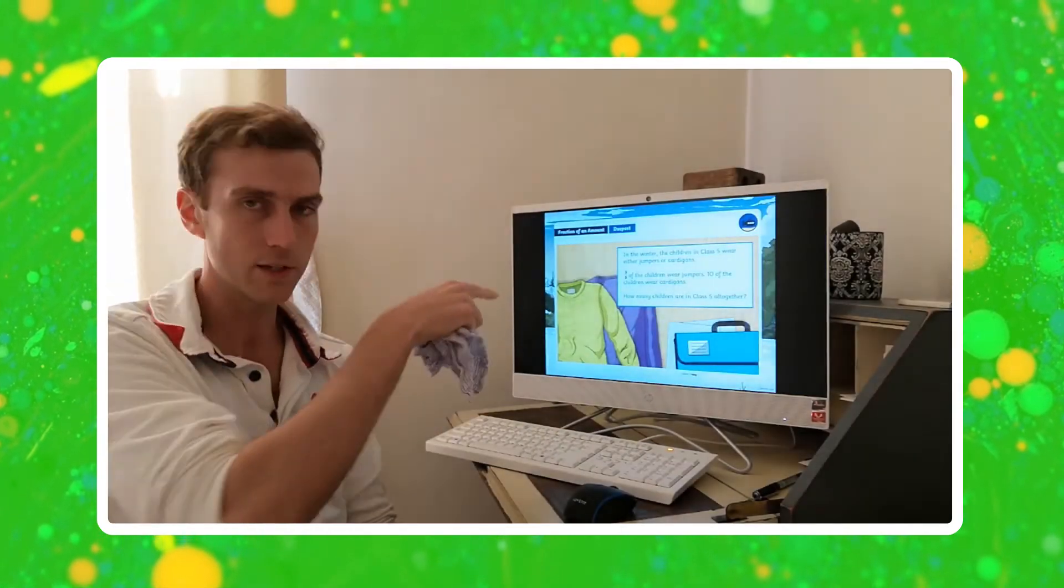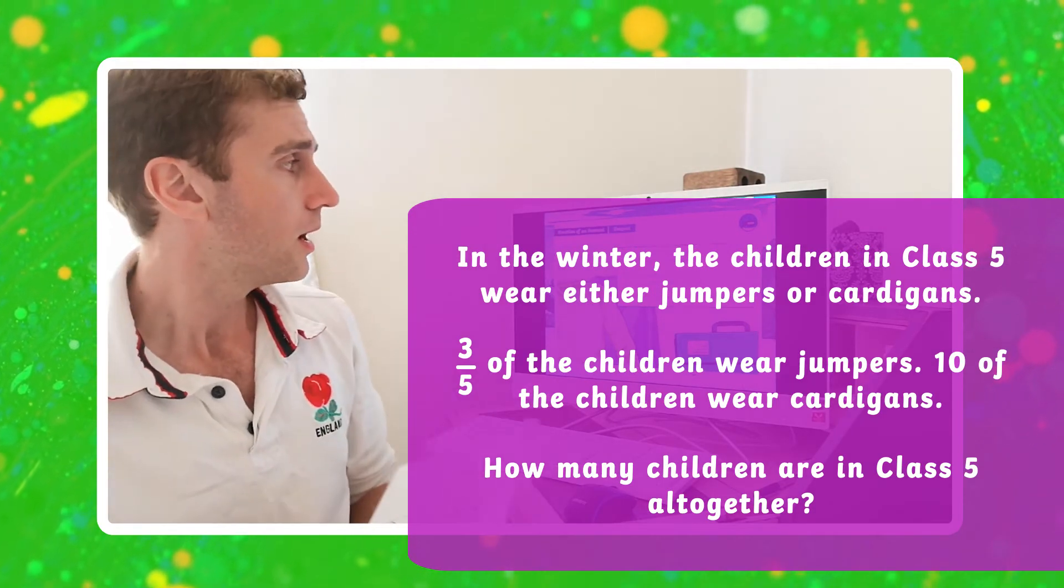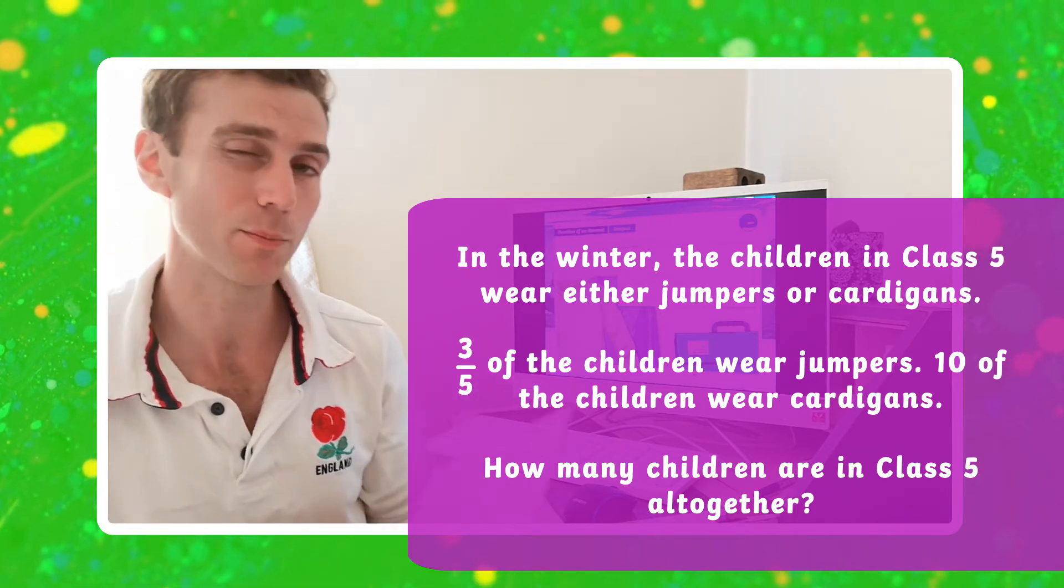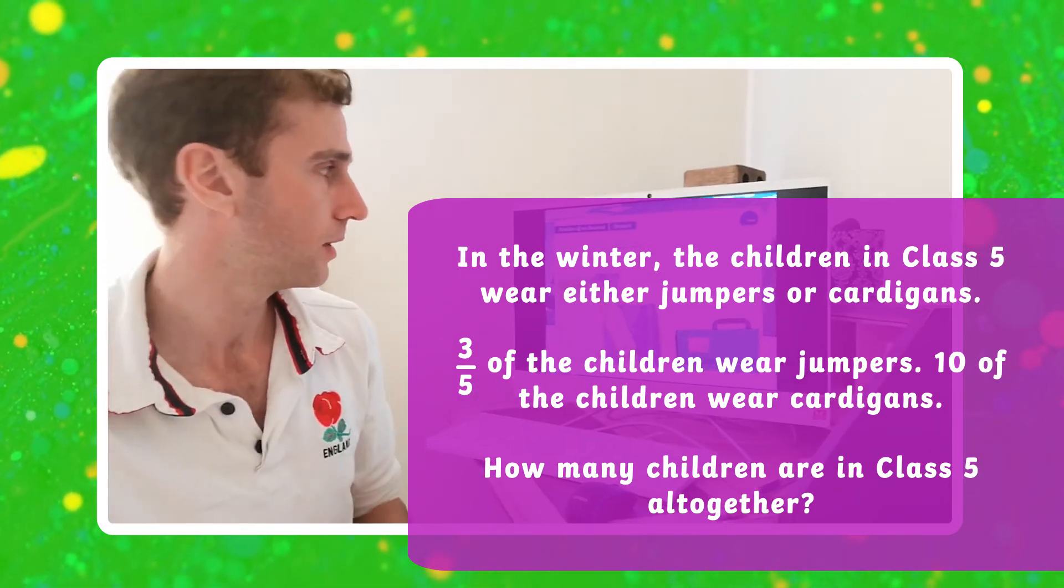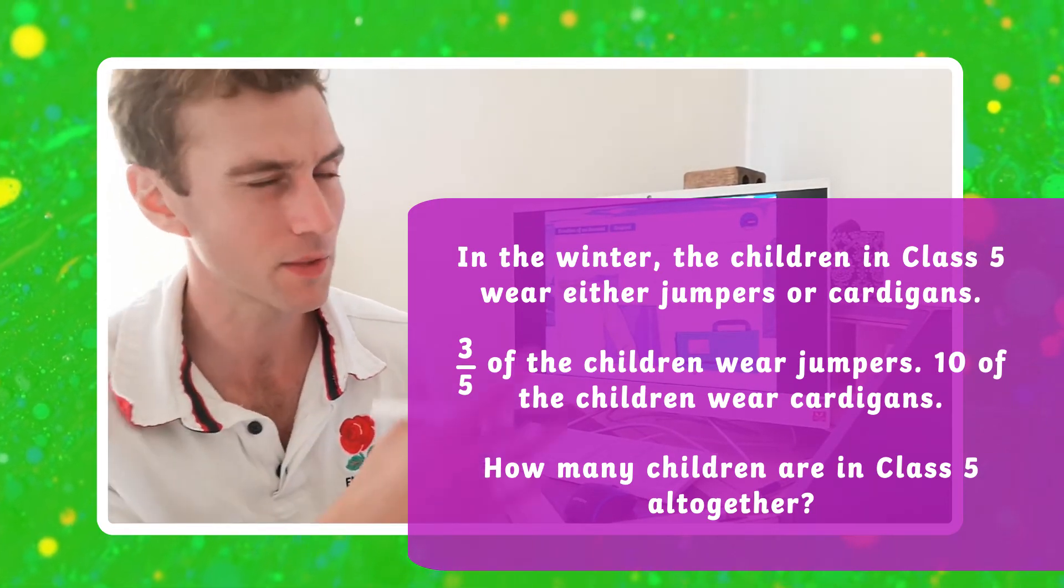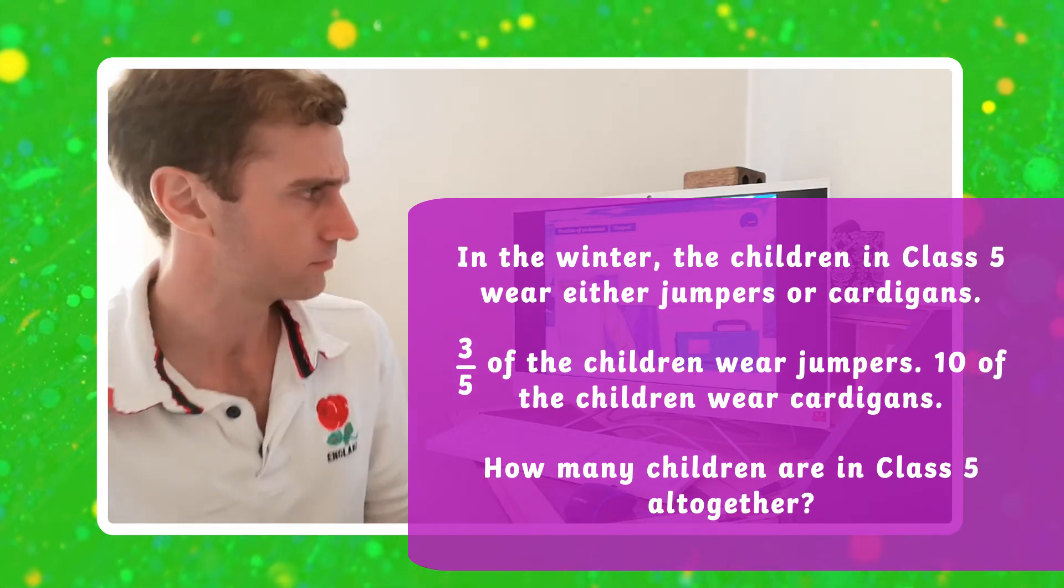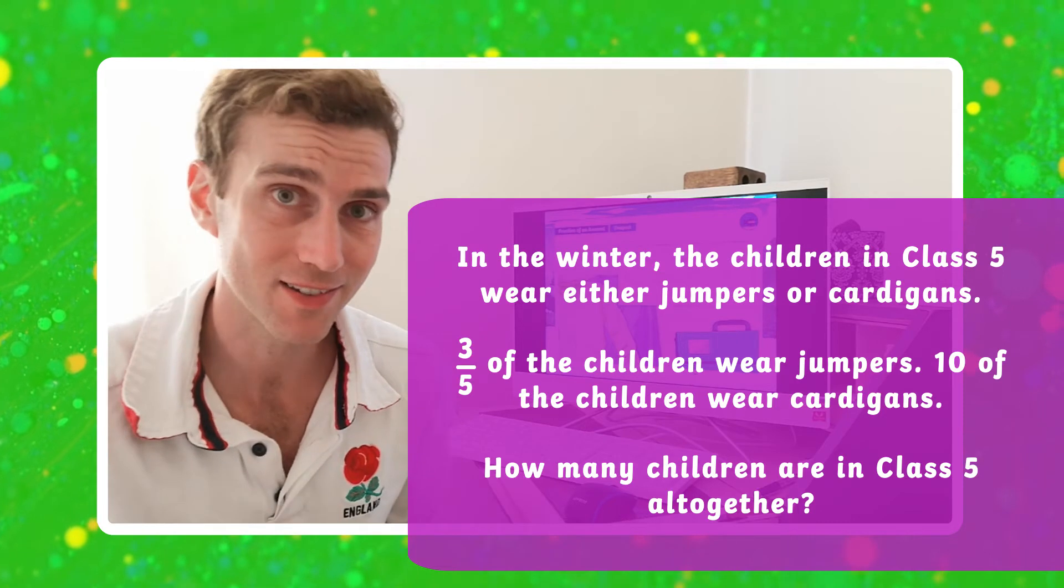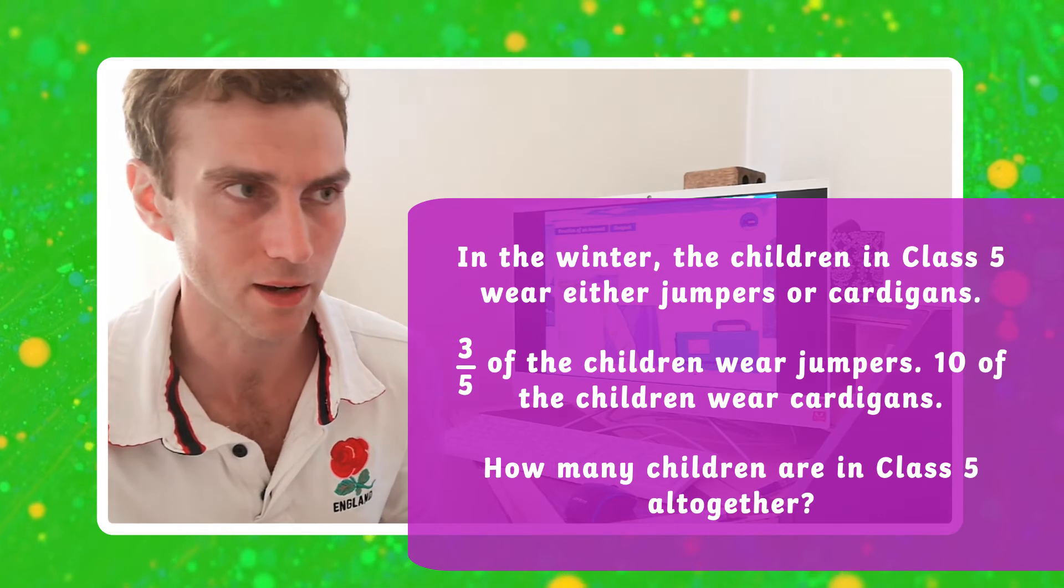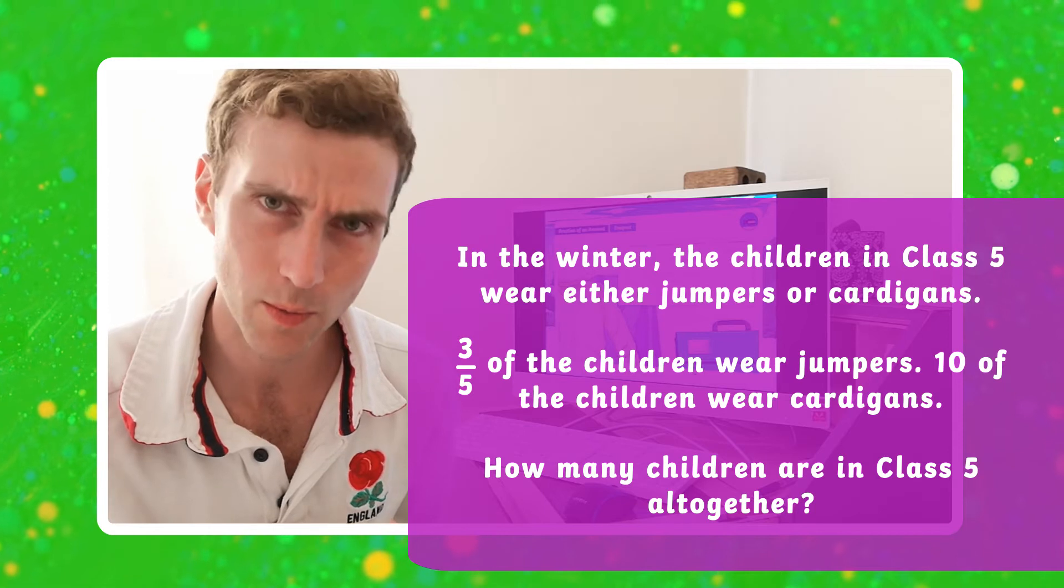Have a look at this question here. Now, you might not be able to read it on my screen. So I'll read it aloud now. In the winter, the children in class 5 wear either jumpers or cardigans. There's an important piece of information in there, but we'll come back to it. There's some other stuff there that's trying to hide it. 3 fifths of the children wear jumpers, 10 children wear cardigans. So how many children wear jumpers? Well, we know 10 children wear cardigans, but it only says 3 fifths of the children wear jumpers. So how do we work that out?